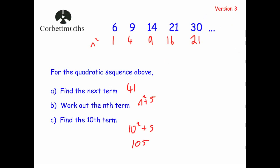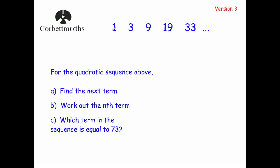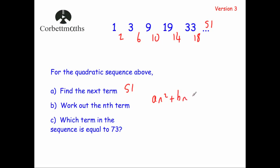Now let's look at a slightly more complicated example. The sequence is 1, 3, 9, 19, 33. Find the next term: it goes up by 2, then 6, then 10, then 14 — next difference is 18, so the next term is 51. For the nth term, the second differences are 4, 4, 4, 4. That equals 2a, so a = 2.